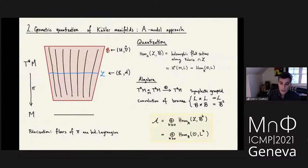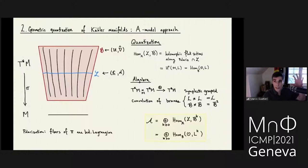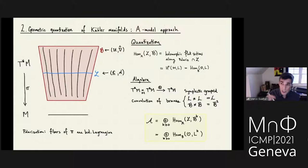So this is just an A-model approach to the quantization of Kähler manifolds. We've now done the left-hand column: the traditional approach to quantizing Kähler, and then this alternative approach lifting to the cotangent bundle. The reason I did this is that it is this A-model approach which appears to generalize when we deform into the non-commutative direction.